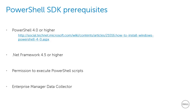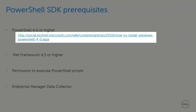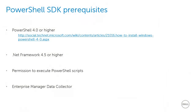There are several prerequisites for the PowerShell SDK. First, both PowerShell 4.0 or higher and the .NET Framework 4.5 or higher must be installed. Newer versions of Windows already include the required version of PowerShell, but older versions, like Windows 7, do not. You can use the link shown on the screen to get more information about installing PowerShell 4.0, or search with the keywords 'Install PowerShell 4.0'. The user account must also have permission to execute PowerShell scripts, and lastly, you need access to an Enterprise Manager data collector installed within your data center.